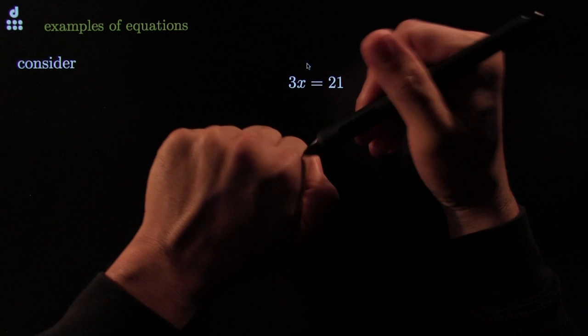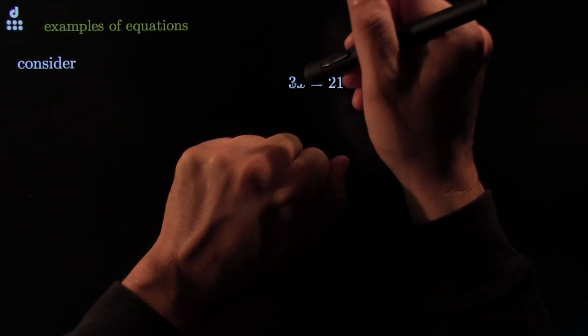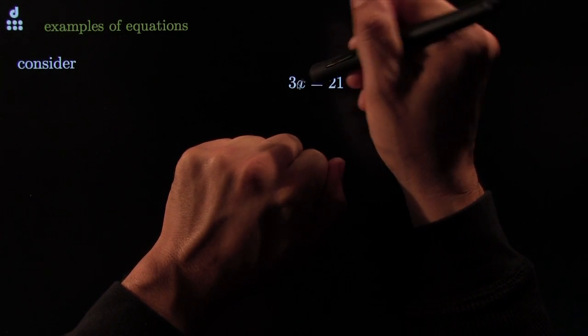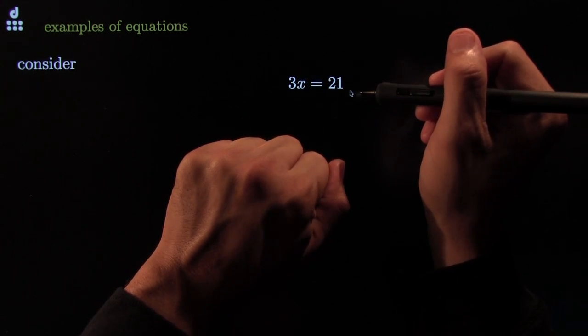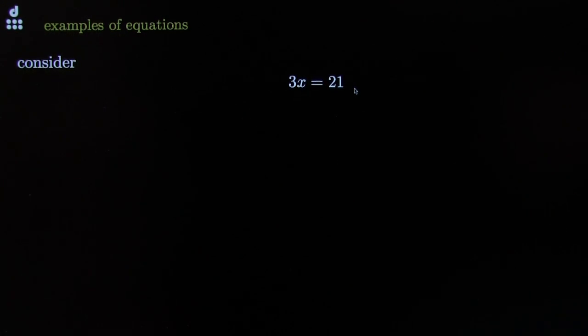It goes like this: I've got some number in my hand. I won't tell you what it is, but I'll give you a hint about it. If you take 3 times that number, we usually call that number a variable, or x. 3 times the number, you get 21.